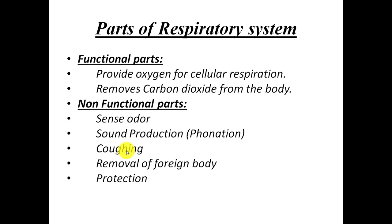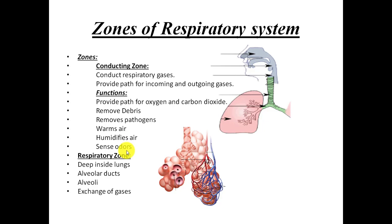The respiratory system has been divided into two zones: the first is the conducting zone and the second is the respiratory zone. The conducting zone means those parts of the respiratory system which carry the respiratory gases. If you follow the cursor of my mouse, the gas enters through the nasal cavity.